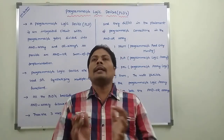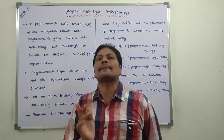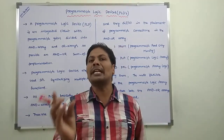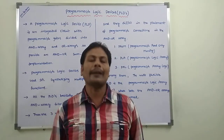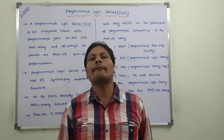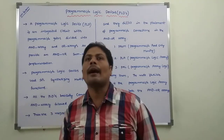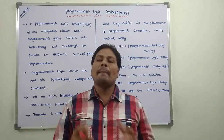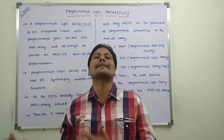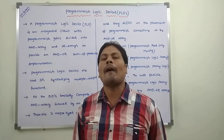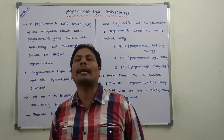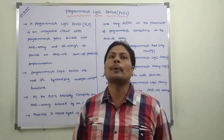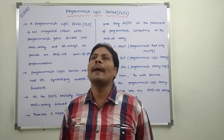There are three major types of PLDs. The main difference between these three PLDs is the placement of Programmable Connections in the AND-OR Array. The three major types of PLDs are: Programmable Read-Only Memory (PROM), Programmable Array Logic (PAL), and Programmable Logic Array (PLA).